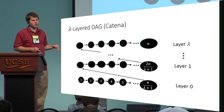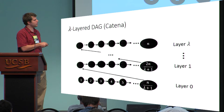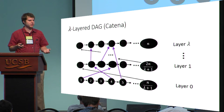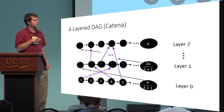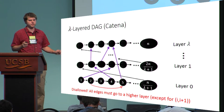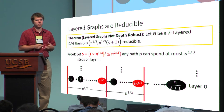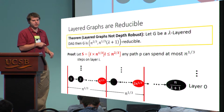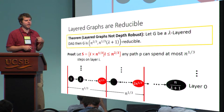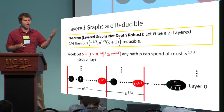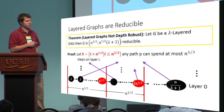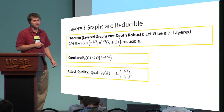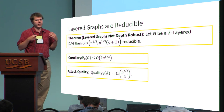A layered graph is just n nodes arranged into λ layers of equal size. The last node in each layer is connected to the first node in the next layer, and any additional edge must go from a lower layer to a higher layer — edges that stay within a layer are disallowed. I claim these graphs are reducible. We break up each layer into segments of size n^(1/3), and add the last node in each segment to our set S. After deleting these nodes, any path can spend at most n^(1/3) steps on layer i, and there are at most λ layers, so the total depth is λ·n^(1/3). This gives us attacks with energy complexity n^(5/3), or equivalently, attack quality scaling as n^(1/3).